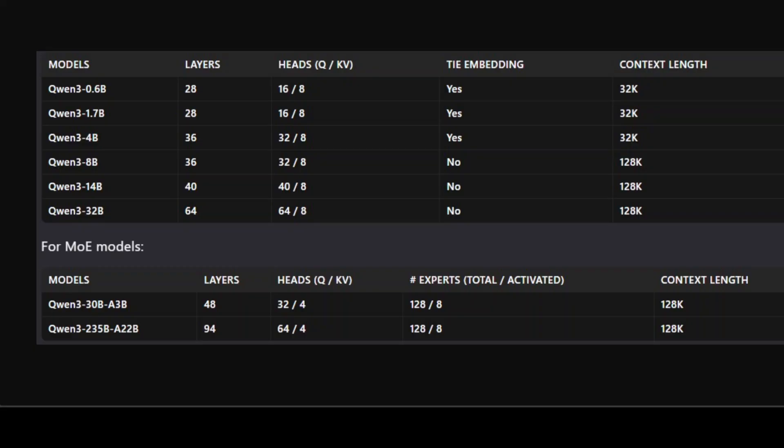Then there are two Mixture of Experts models, which are sparse models. Instead of activating all neurons, only the relevant experts get activated based on the user's query. The flagship MoE model is Qwen3 235B-A22B. The 'A22B' stands for activated parameters — so the model has 235 billion total parameters but only 22 billion are activated. This 235B model achieves competitive results in benchmarks covering coding, math, and general capabilities compared to DeepSeek, GPT-4o, and others.